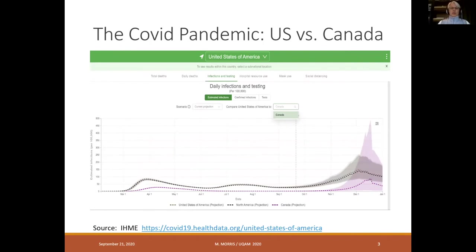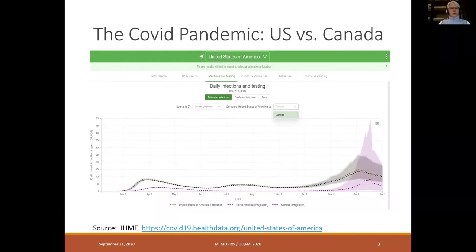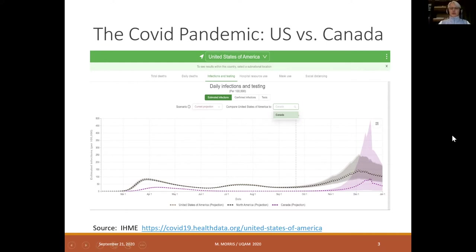People are becoming very interested in modeling these days, in part because of the COVID pandemic. I pulled the most recent projections from the Institute for Health Metrics and Evaluation, the IHME, located here in Seattle, Washington. This is today's projection comparing the U.S. to Canada — the U.S. is obviously the higher line. These are rates per 100,000 population, which means Canada's rate of infection is dramatically less than the U.S. There's a great deal of uncertainty in the projections as we go out into the coming winter.